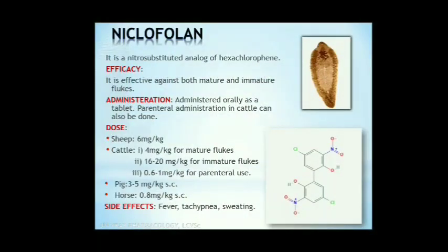Next is niclofolan. It is a nitro-substituted analogue of hexachlorophene, effective against both mature and immature flukes, administered orally as tablet. Parenteral administration in cattle can also be done. Dose: sheep 6 mg/kg; cattle 4 mg/kg for adult flukes; 16-20 mg/kg for immature flukes; 0.6-1 mg/kg for parenteral use; pigs 3-5 mg/kg subcutaneously; horses 0.8 mg/kg subcutaneously. Fever, tachypnea, and sweating can be seen as side effects.